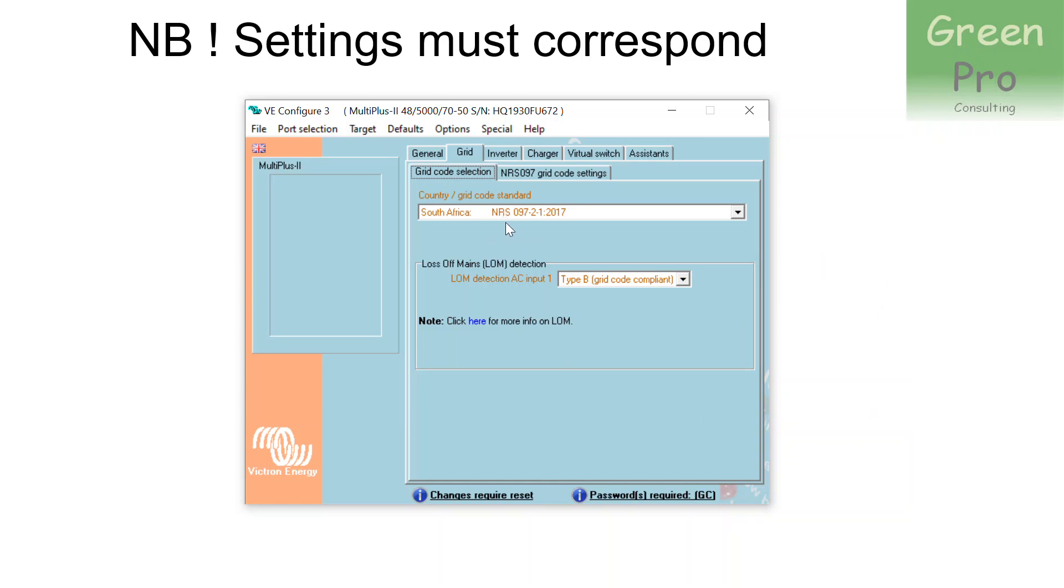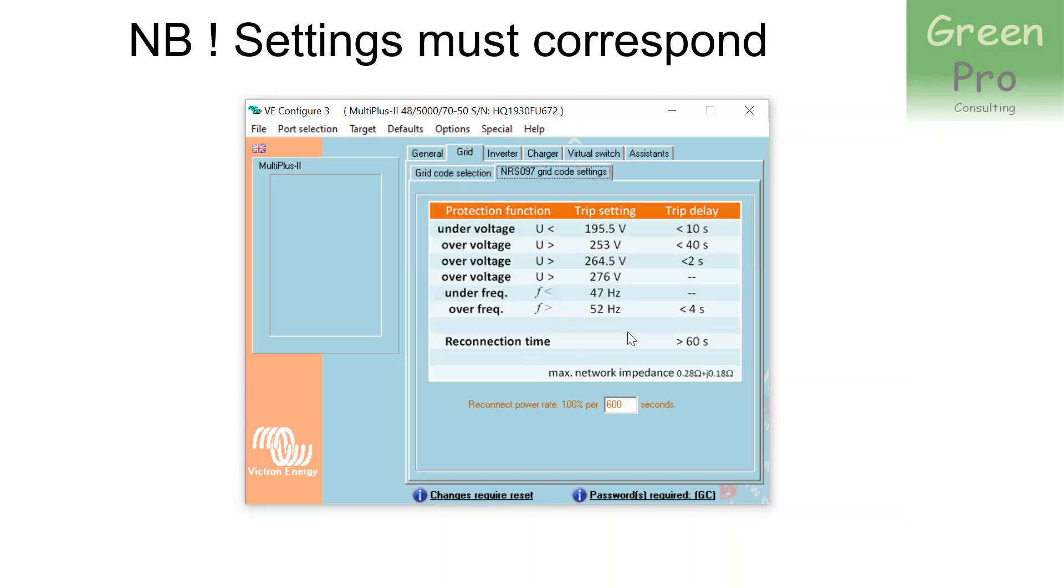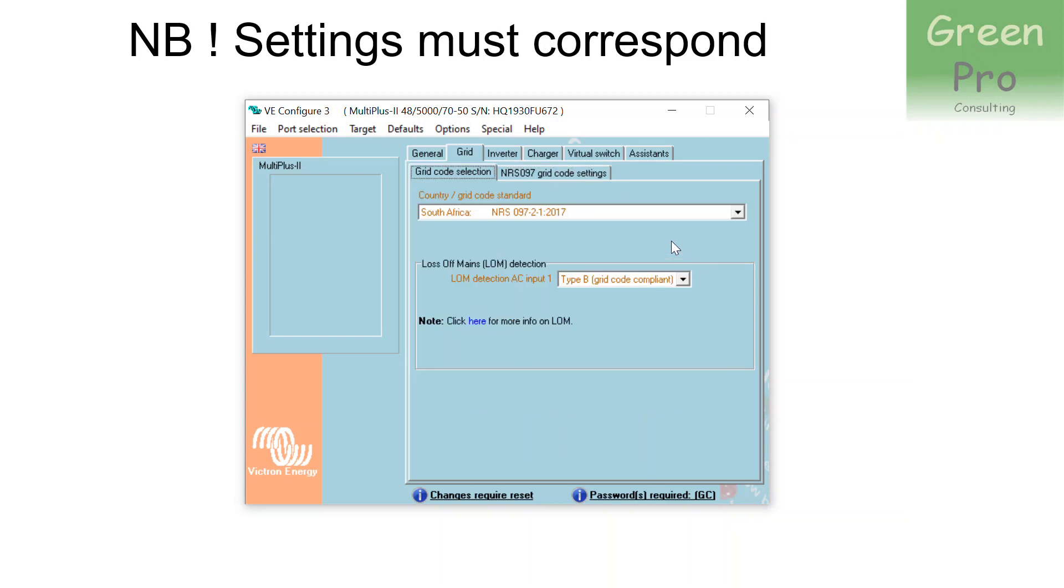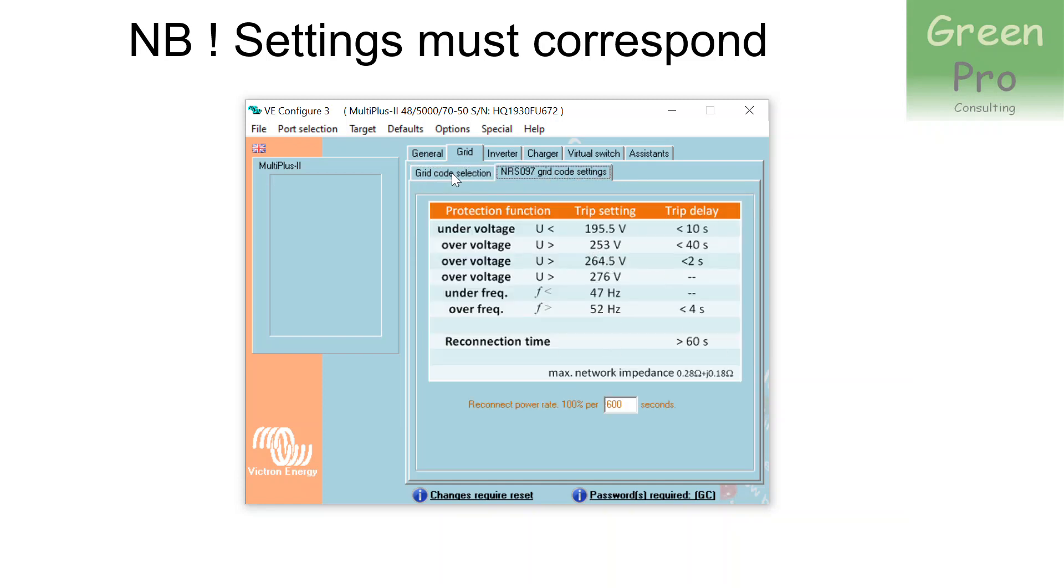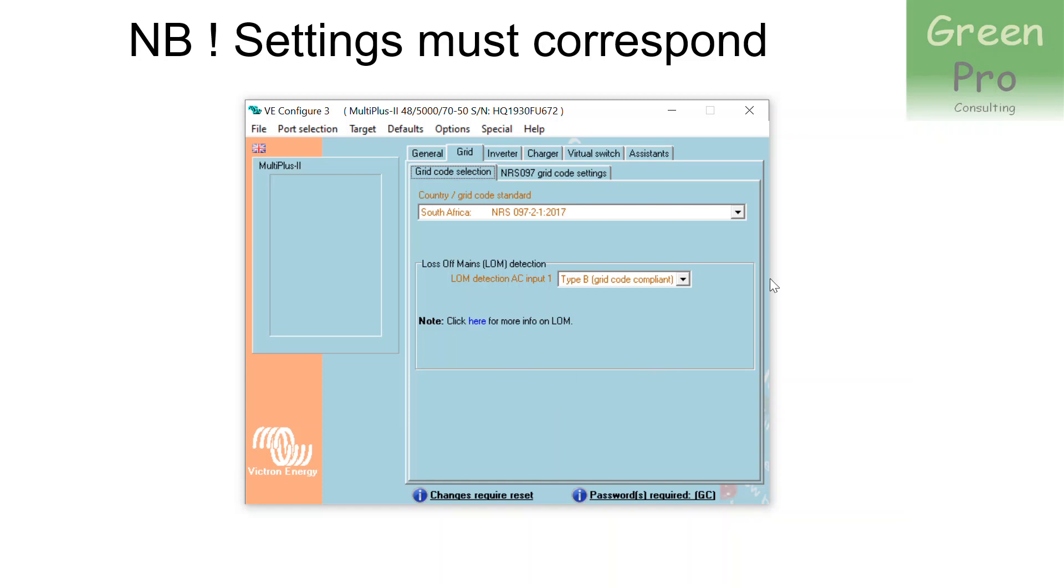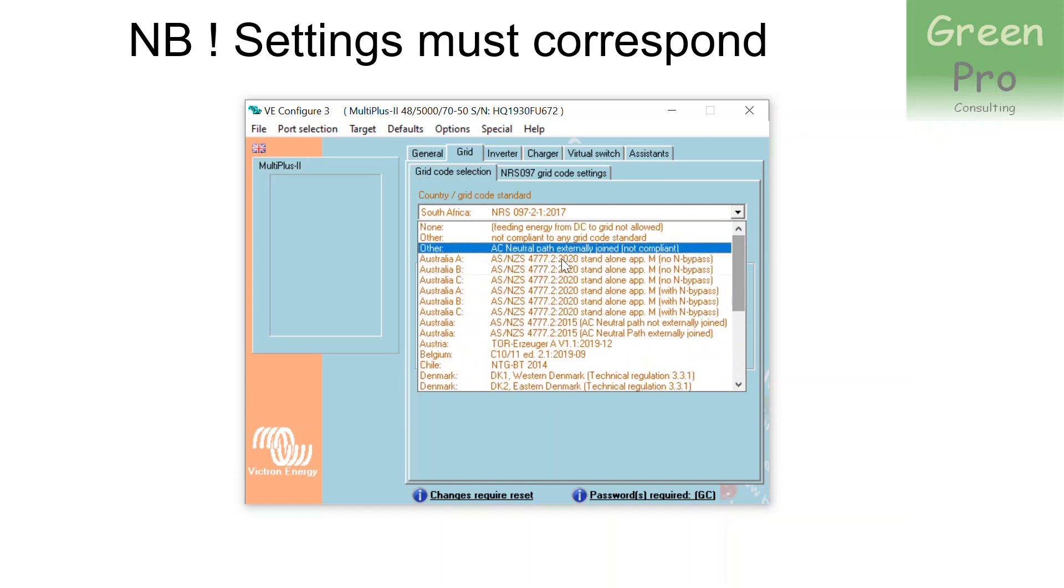The South African grid code is called NRS097-2-1. There might be a later version than the 2017, but that's the version that's built into the inverter. Now, if you look at this standard, it determines things like frequency, like over and under voltage. And you can see it's more or less 195 and 253 volt. So what it says is the grid that's coming into the inverter has to be somewhere in that 195 and the 253 voltage range. The problem is that ESCOM doesn't comply to NRS097.